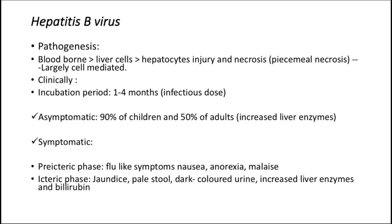Which of these outcomes occurs seems to be determined by the person's immune response to the infection. Acute hepatitis B is usually manifested by the gradual onset of fatigue, loss of appetite, nausea, and pain and fullness in the right upper abdominal quadrant. Early in the course of the disease, pain and swelling of the joints and occasional frank arthritis may occur, mediated by antigen-antibody complexes.